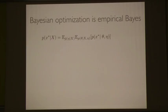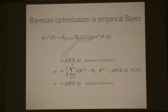Other talks you might see today will mention procedures like Markov chain Monte Carlo and variational inference. Those are approximations to the inner expectation. I'm going to be talking more about this outer expectation.